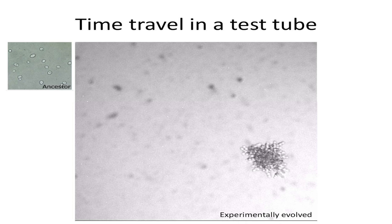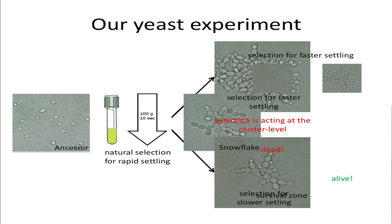We are trying to do essentially time travel in a test tube. We work with yeast — baker's yeast, Saccharomyces cerevisiae — which is a unicellular fungus, and we experimentally evolve multicellularity from that ancestor. What you're looking at here is what we call snowflake yeast reproducing in a 16-hour time-lapse in the lab. We got this by exerting a very simple selective pressure: we select for rapid sedimentation through liquid media. Clusters of cells settle faster than single cells, so mutations which create clusters are strongly favored by natural selection.